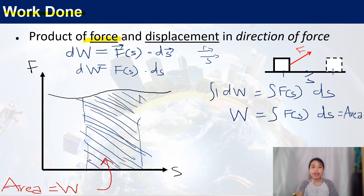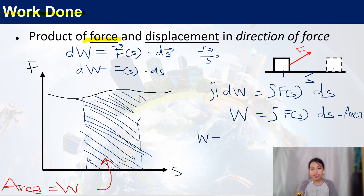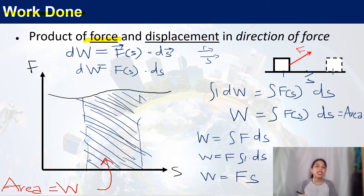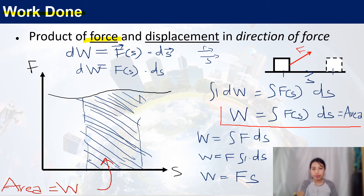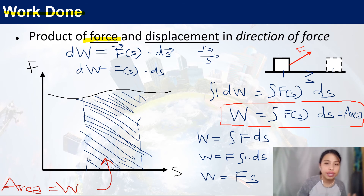In the world of maths, whenever you see the integral of a function, it means the area under the curve. So the integral of F(S) dS equals the shaded area under the F-S curve — that's what it means. If we take it further and say F is constant, then the integral of F dS lets us take F out of the integral. All that's left is the integral of dS, which gives you F times S. This is the full derivation of how the W equals FS equation comes about, and why the area under the F-S curve is work done.